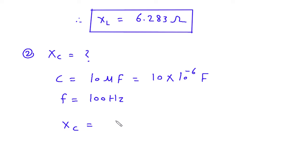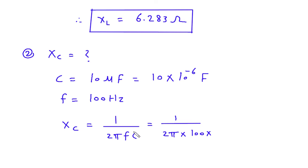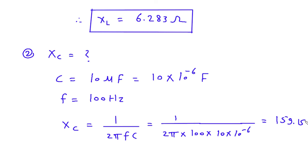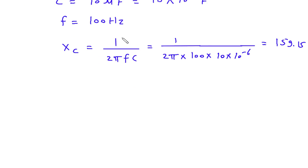Therefore, XC is equal to 1 upon 2πFC. So it is 1 upon 2π multiplied by F which is 100, multiplied by C which is 10 into 10 to the power minus 6. This gives 1 upon 2π multiplied by 100 multiplied by 10 into 10 to the power minus 6, that is 159.15. Since it is capacitive reactance, its unit will be Ohm.